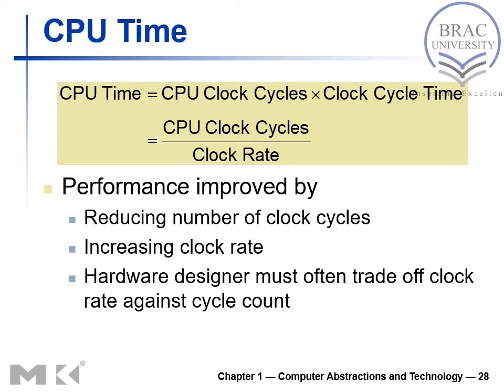How can we calculate CPU time? CPU time equals CPU clock cycles multiplied by clock cycle time. What is the clock of your system and what is the clock cycle time — the duration of each clock cycle? This can also be written as CPU clock cycles divided by clock rate, because 1 over clock rate equals clock cycle time.